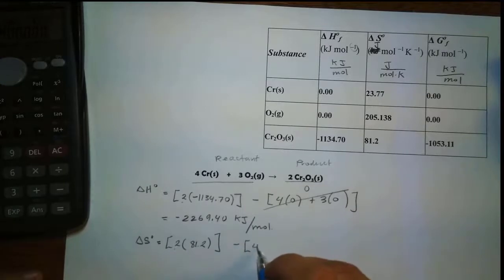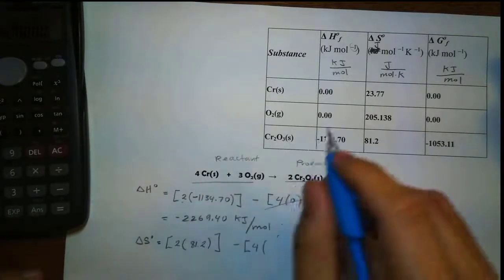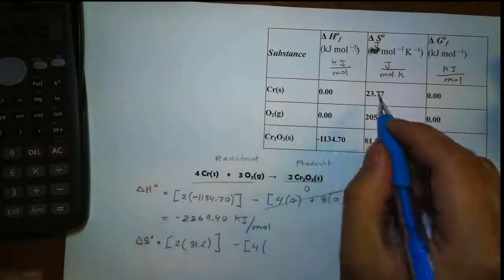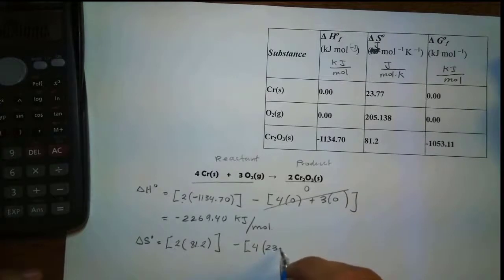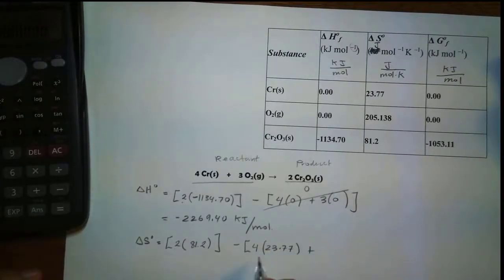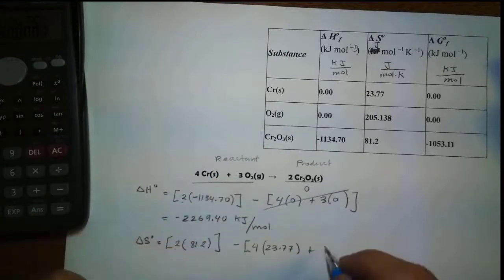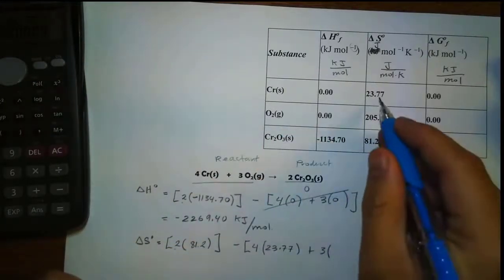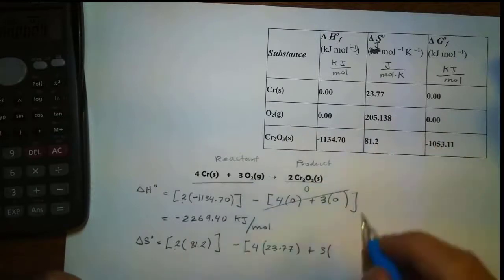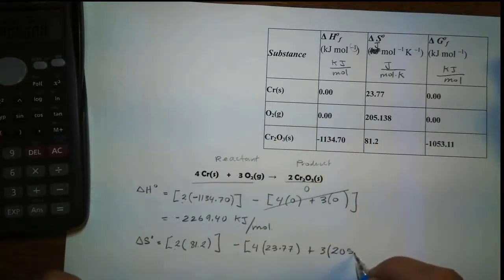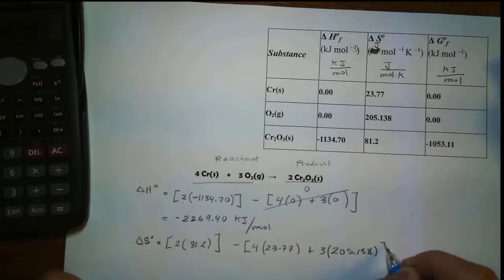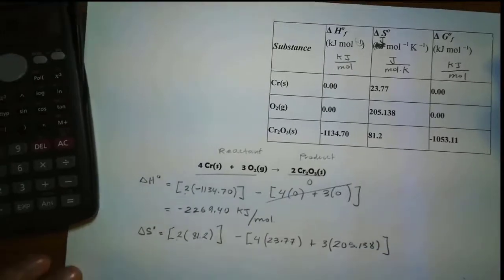So in this case we have 4 times Cr, where Cr is 23.77. And notice how it's the sum of reactants, so we need to add them together. We also have 3 oxygen, and the value for oxygen is 205.138.